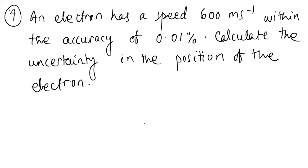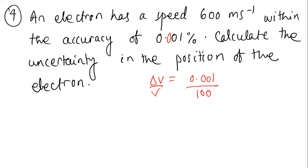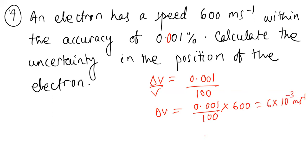The fourth question: an electron has a speed of 600 m/s within an accuracy of 0.001%. We need to calculate the uncertainty in position. The relative uncertainty Δv/v = 0.001/100 = 10⁻⁵, so the absolute uncertainty Δv = 600 × 10⁻⁵ = 6 × 10⁻³ m/s.